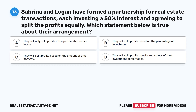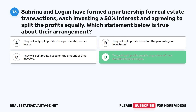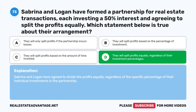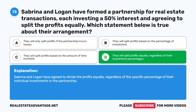Question 73: Sabrina and Logan have formed a partnership for real estate transactions, each investing a 50% interest and agreeing to split the profits equally. Which statement below is true about their arrangement? A. They will only split profits if the partnership incurs losses. B. They will split profits based on the percentage of investment. C. They will split profits based on the amount of time invested. D. They will split profits equally, regardless of their investment percentages. The correct answer is D. Sabrina and Logan have agreed to divide the profits equally, regardless of the specific percentage of their individual investments.